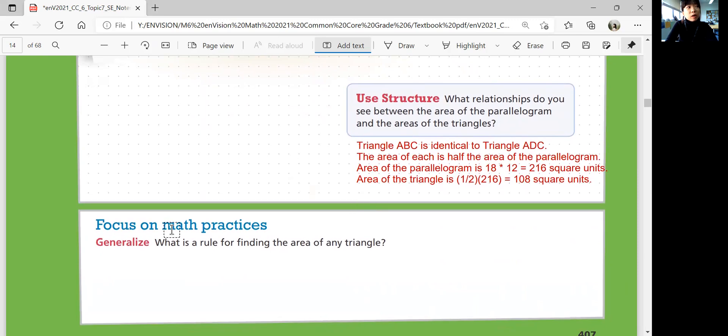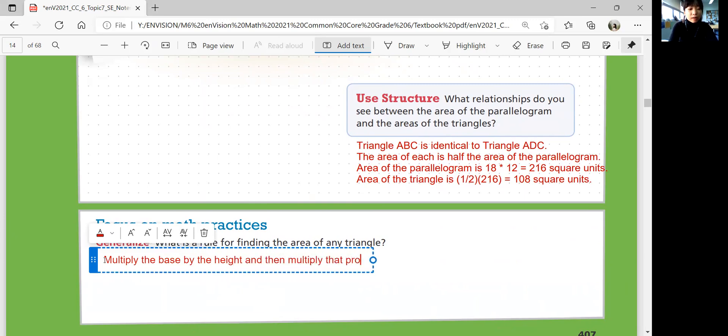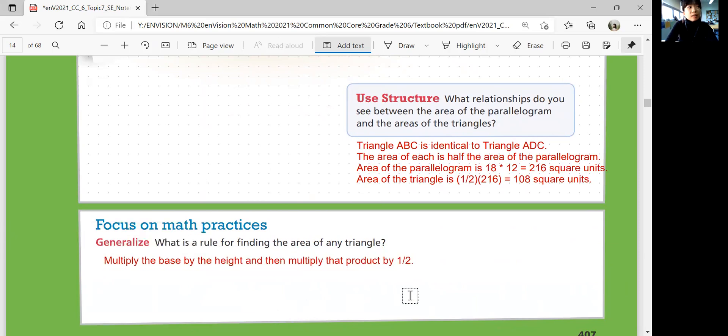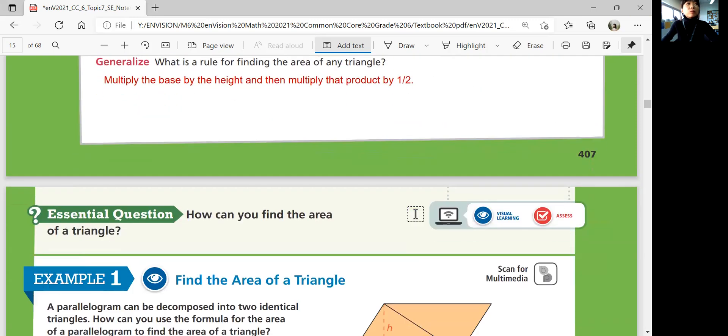So focus on math practices. What is the rule for finding the area of any triangle? What is the rule? What is the equation? You multiply the base by the height and then multiply that product by one half. That's the rule for finding the area of any triangle. Now that we've established that, let's move on to example one on the next page.